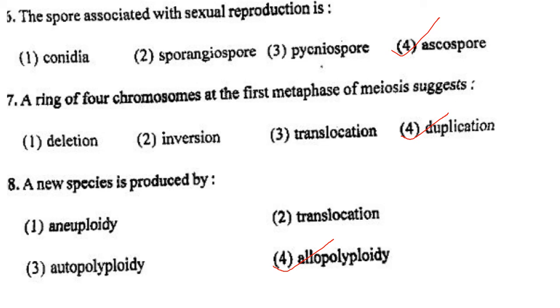Next one: The spore associated with sexual reproduction is option 1, conidia; option 2, sporangiospore; option 3, pycniospore; option 4, ascospore. Answer is option 4: ascospore.